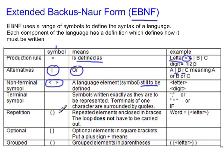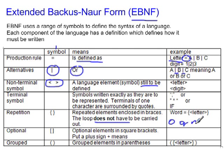Next we have repetition — if you want to do something multiple times. For example, a word is multiple versions of a letter, so you put curly brackets around it. The important thing here is that the loop does not have to occur — when you have those curly brackets it means zero or more times that the element appears.